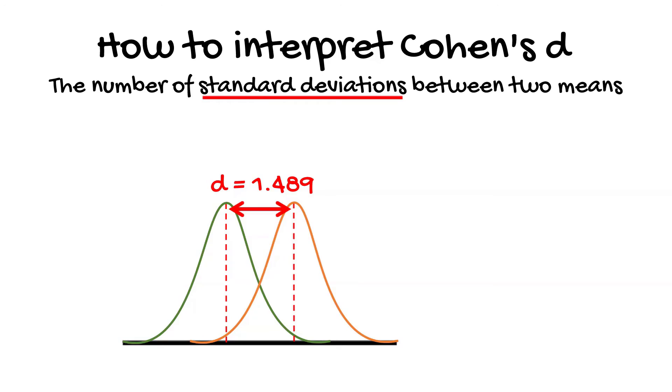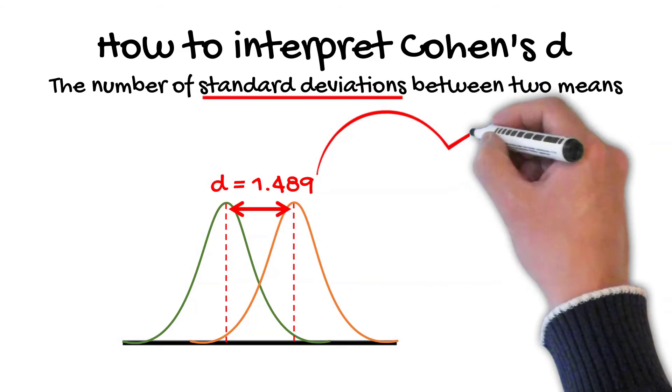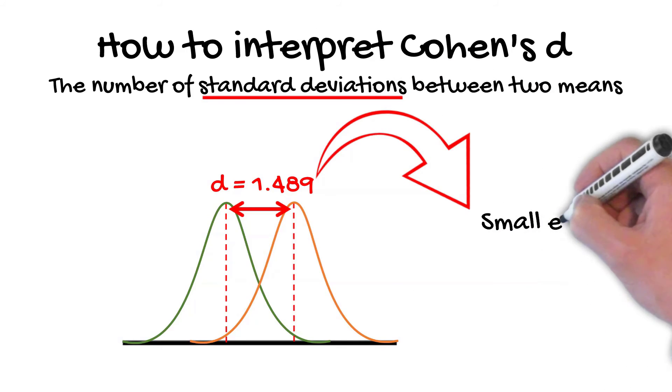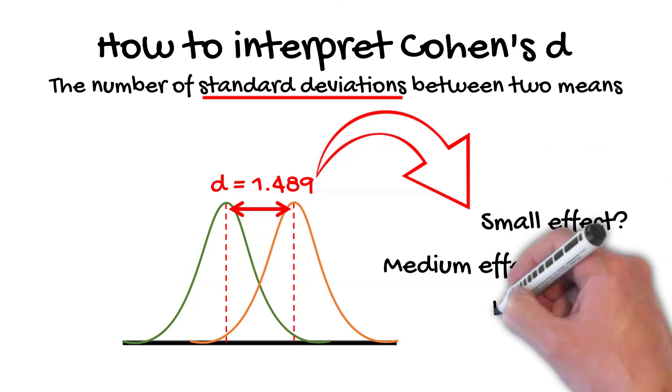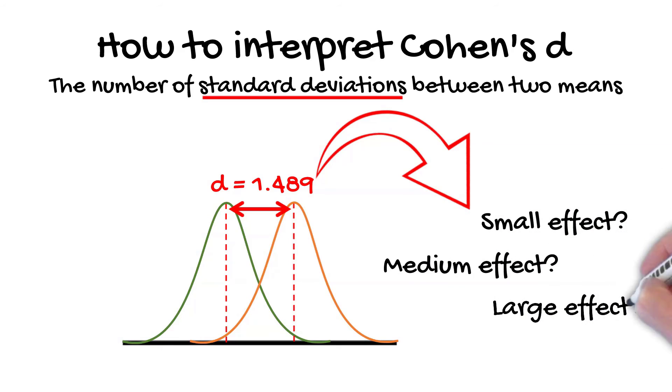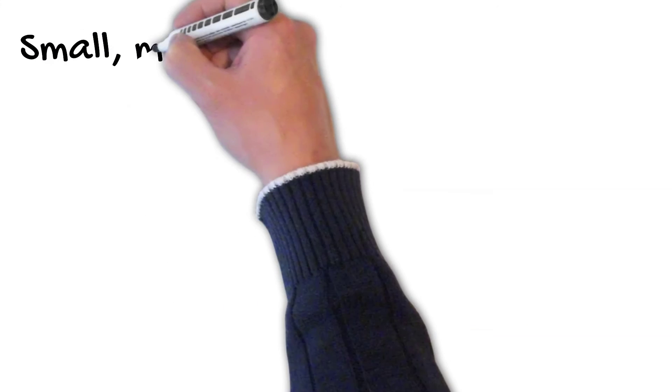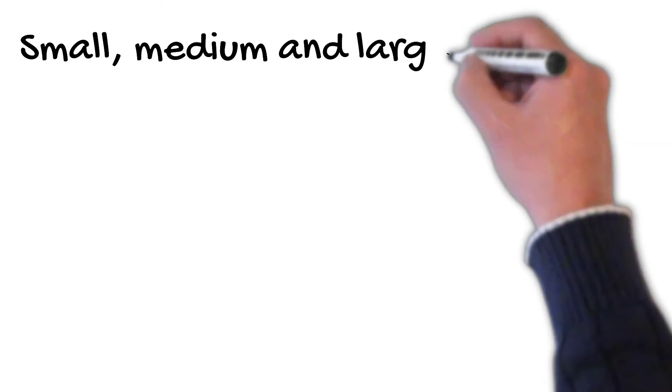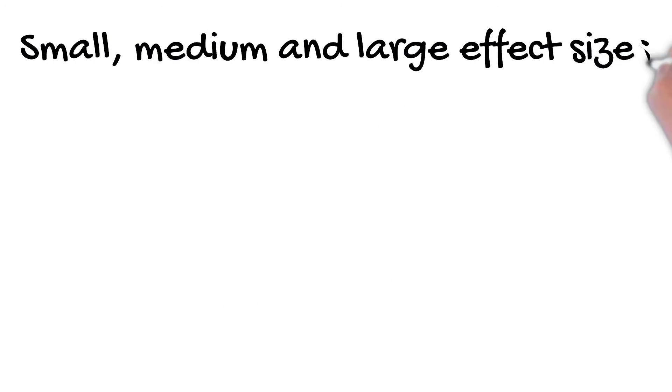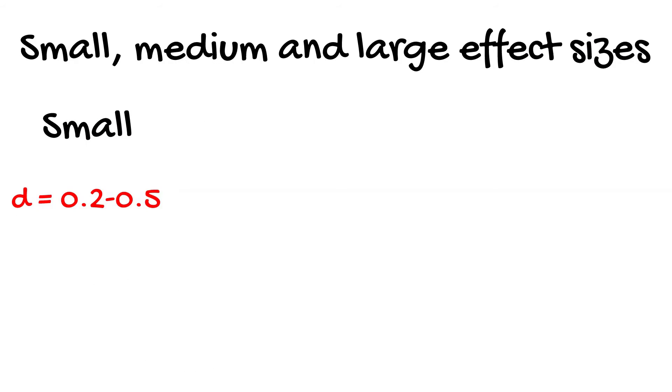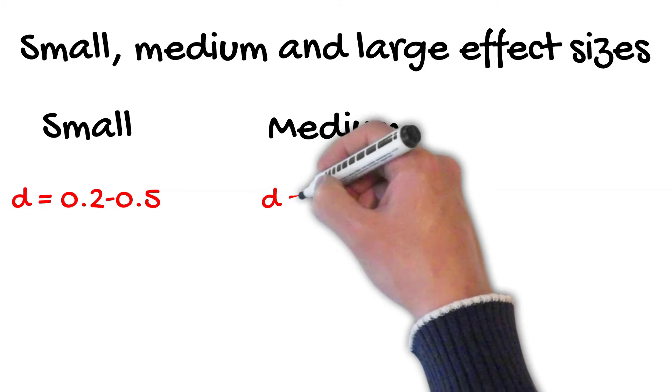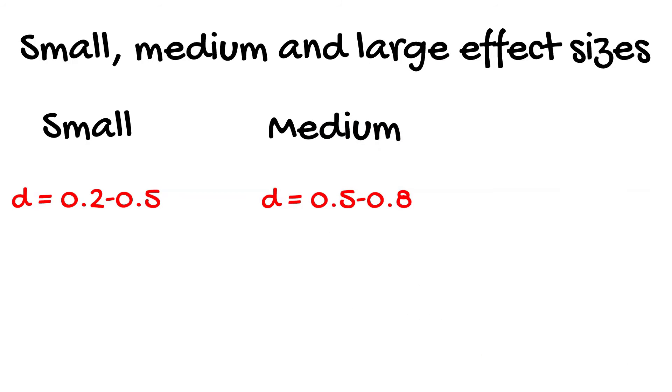But how do you know how large an effect size this is? Cohen himself interpreted the D values into three subgroups. However, these values are just general interpretations and shouldn't be used rigidly. These groups are: small, where D equals 0.2 to 0.5; medium, where D equals 0.5 to 0.8; and large, where D is anything over 0.8.